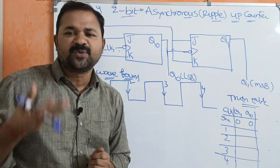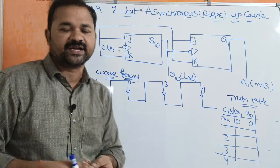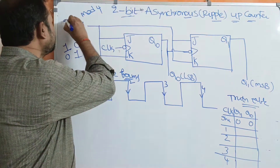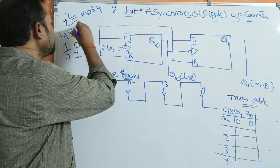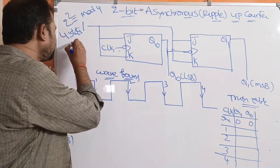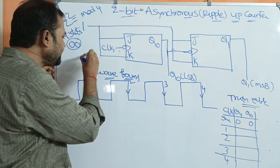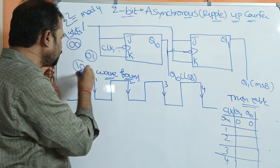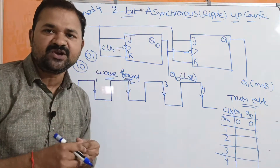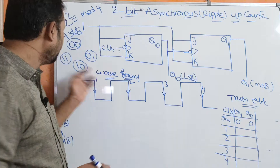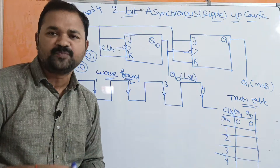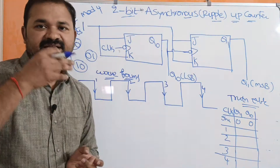An up counter produces the states in incremental order. Since the counter size is 2 bits, we have 2² = 4 states: 00, 01, 10, 11, which in decimal are 0, 1, 2, 3. The asynchronous up counter produces the output sequence in incremental order: 0 → 1 → 2 → 3 → back to 0.